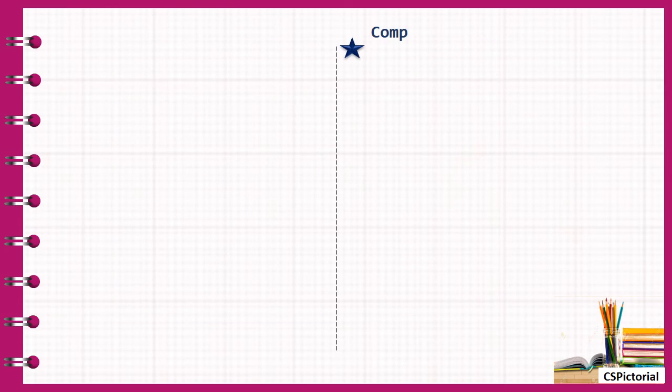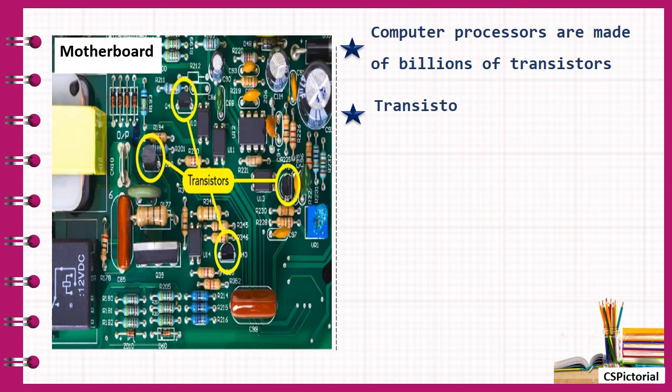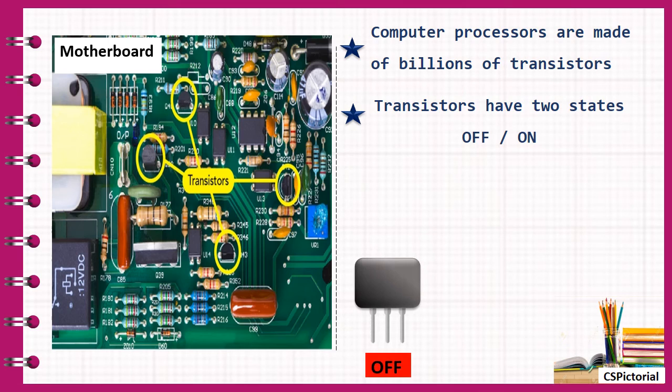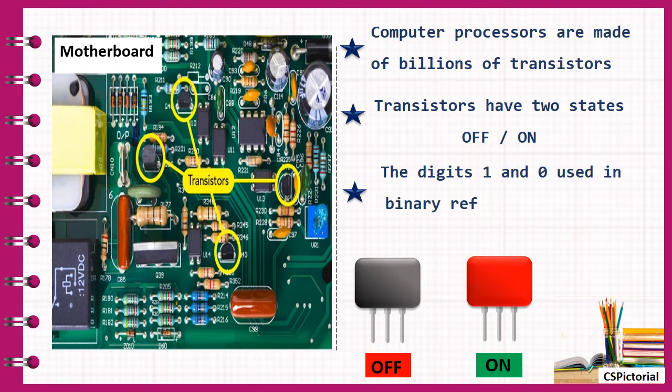Computer circuitry is made of billions of transistors. The transistors could either be turned off or turned on. So, the binary numbers could be easily used to represent the off and on states of transistors.